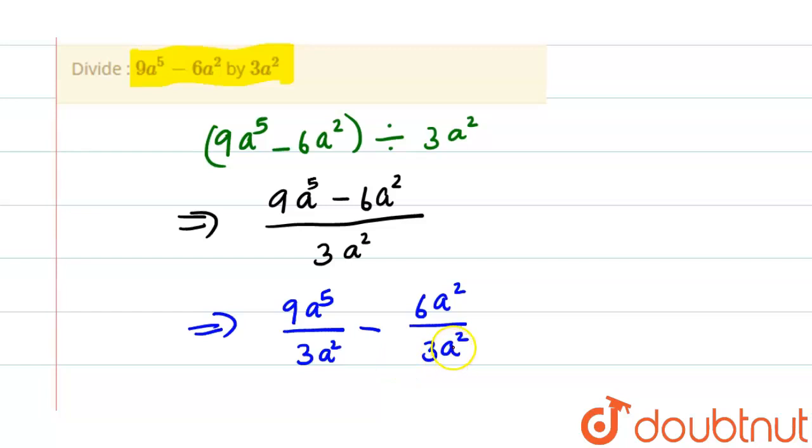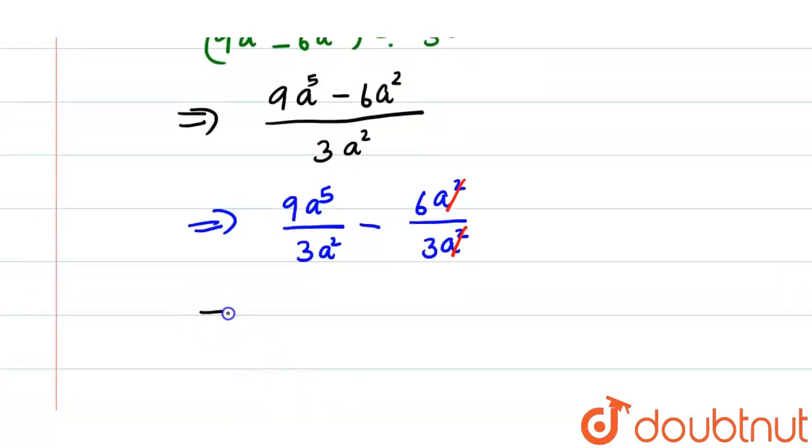From this we can observe that a square and a square can be cancelled. Now this will be equal to, we can write 9a as 3 into 3a raise to 5 divided by 3a square minus 6 by 3.